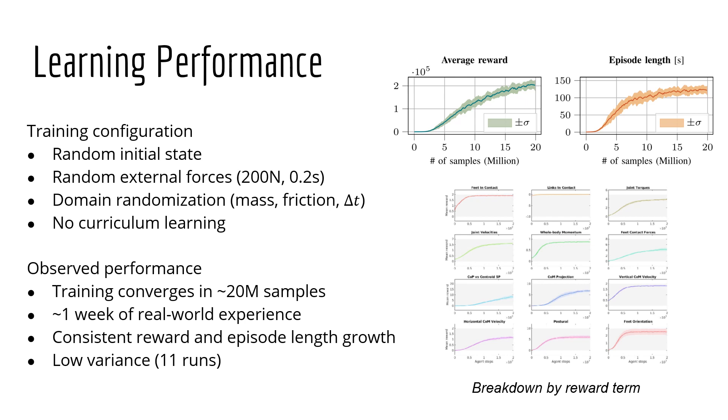The agent is trained from random initial states at each rollout and is subject to random external forces along all directions applied to the robot base. Domain randomization is applied during training, in particular to link masses, ground friction, and control signal delay. Also note that no curriculum learning is employed. As you can see from the top right, training converges in roughly 20 million samples, corresponding to one week of real-world experience. From the plots, we can notice a consistent growth of reward and episode length with low variance, which is also mirrored by individual reward component trends on the bottom right.